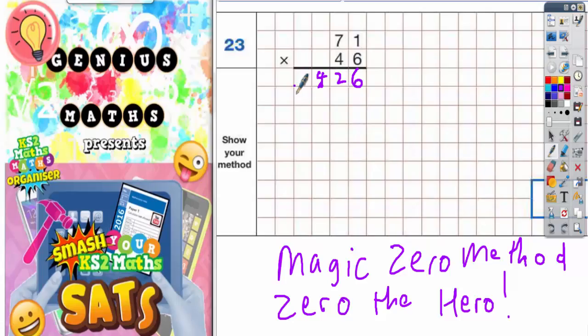So the next thing we need to do is multiply everything by the 4 because we've already times 71 by 6, so now we need to times 71 by 4. But hang on a minute. This 4 is not worth 4. The 4 is worth 40. So we need to times by 40.